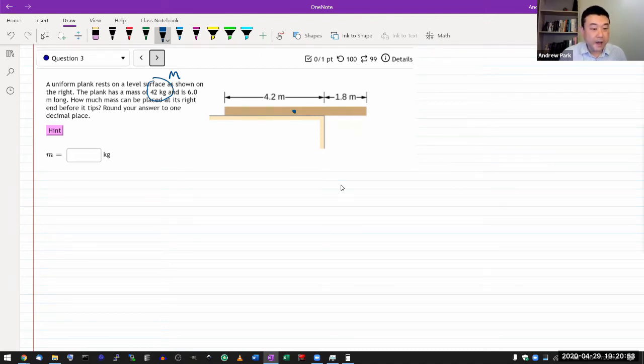It says how much mass can be placed? Okay, so there's something that's not diagrammed here. They are wanting to put an additional mass here. And it's asking how much mass can this be before it tips? Before it tips.